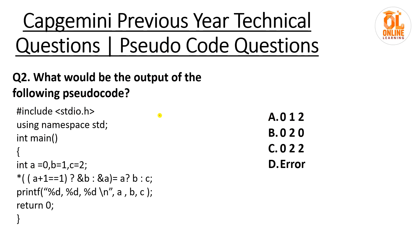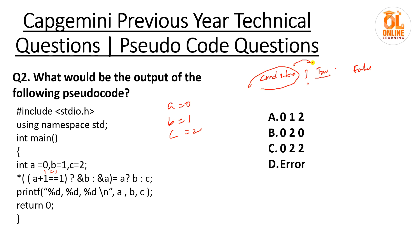Next question — output with a equal to 0, b equal to 1, c equal to 2. We have a plus 1 equals 0 plus 1 which is 1. Then 1 == 1 is true. This is a conditional (ternary) operation: condition ? true_value : false_value. If the condition is true, the true-side executes; if false, the false-side executes.